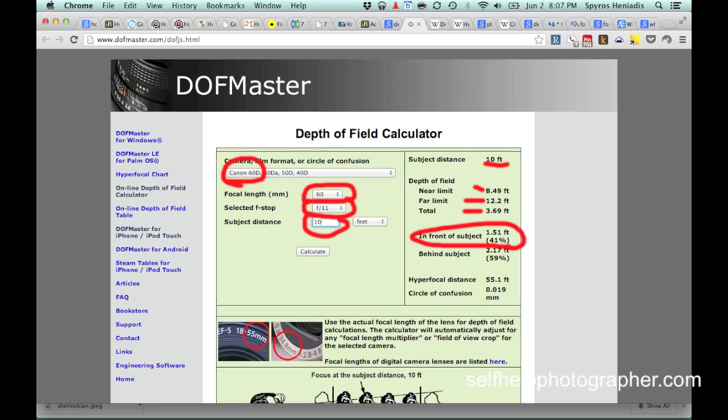These next two numbers show you where the depth of field area is in relationship to the subject. Your subject is always in the middle of the depth of field area. So when you focus on a subject, the depth of field will extend in front of your subject and behind your subject. In this example, the depth of field area extends 1.51 feet in front of the subject and 2.17 feet behind the subject. So you have some room to work in the composition when you know where your subject is and you know what the depth of field area looks like.